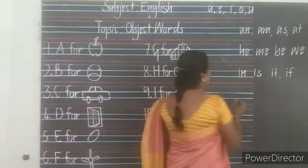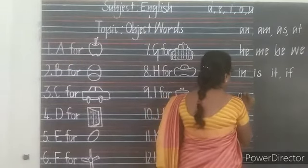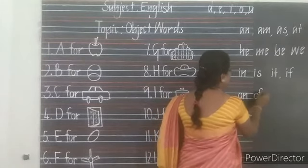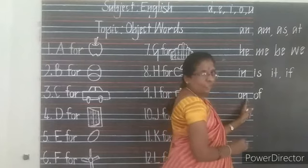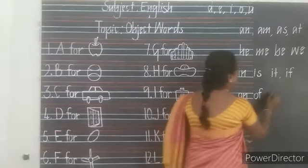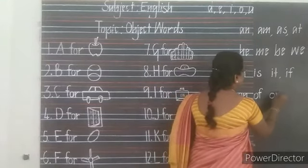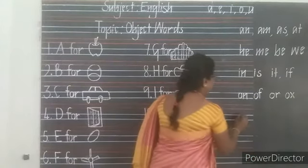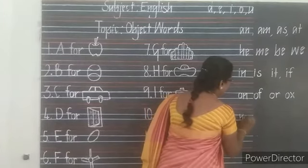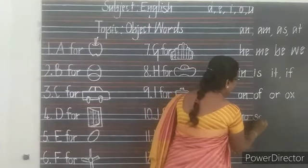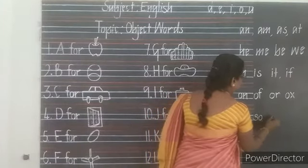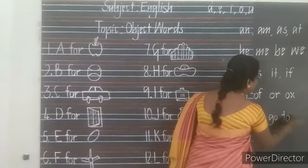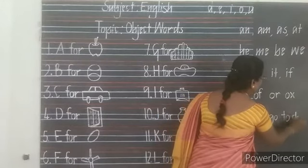Next, by using O: O-N, on; O-F, off; O-R, or; O-X, ox. Next: N-O, no; S-O, so; G-O, go; T-O, to; and D-O, do.